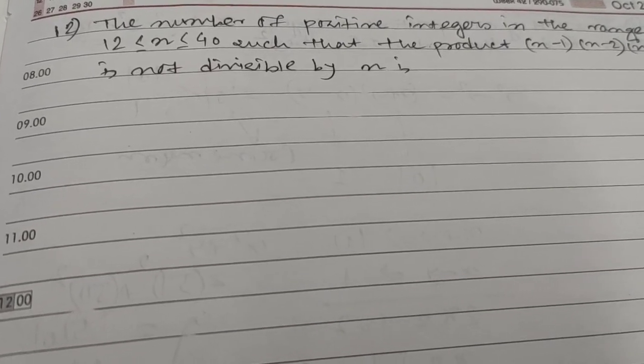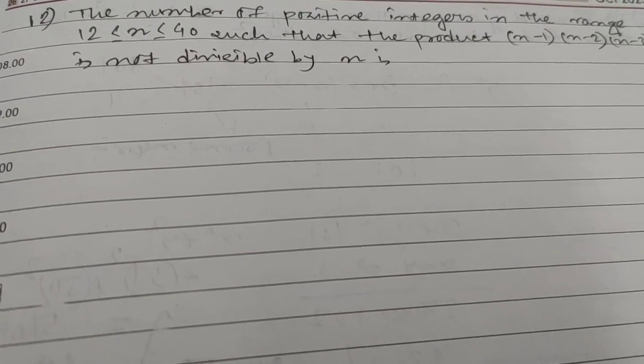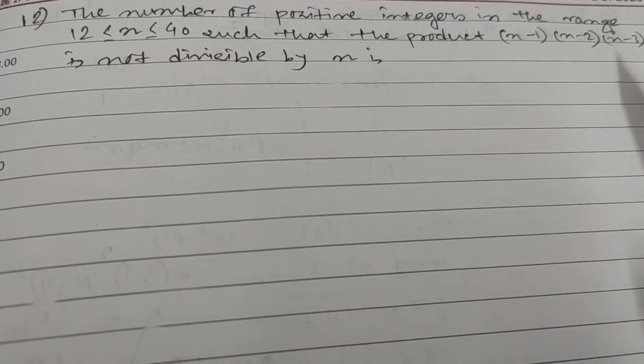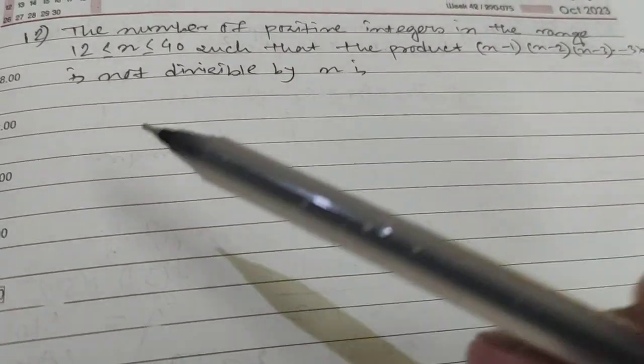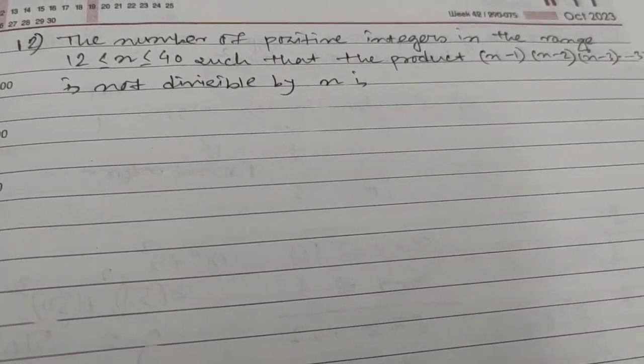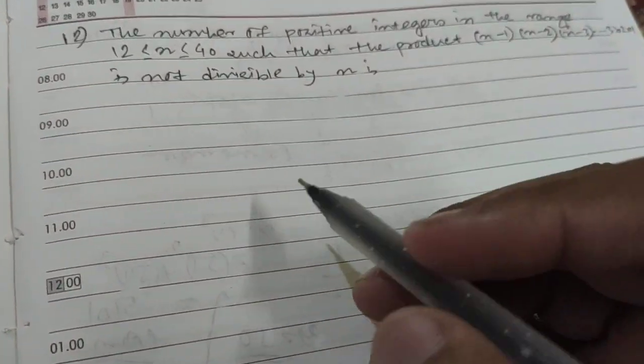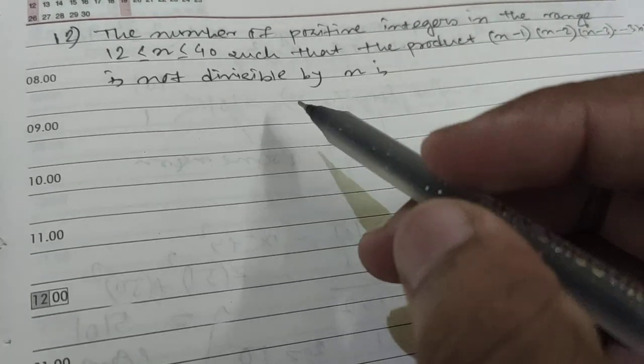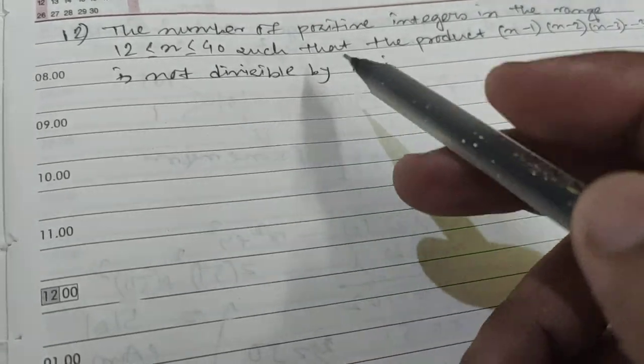such that the product (n-1) × (n-2) × (n-3) × ... × 3 × 2 × 1 is not divisible by n. So basically, the product will not be divisible by n